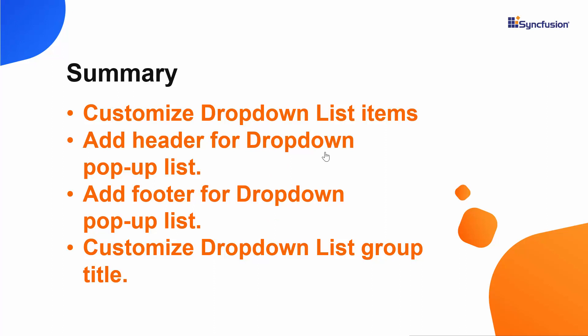Let me summarize some of the important points. We have seen how to customize the Vue drop down list items as well as the selected value. Also, we have seen how to add header and footer for the drop down list popup and how to customize the drop down list group title. If you would like to see the working example, you can download it from the GitHub link shared in the description below. If you find this video useful, don't forget to click the like button and subscribe to our channel. Thanks for watching!